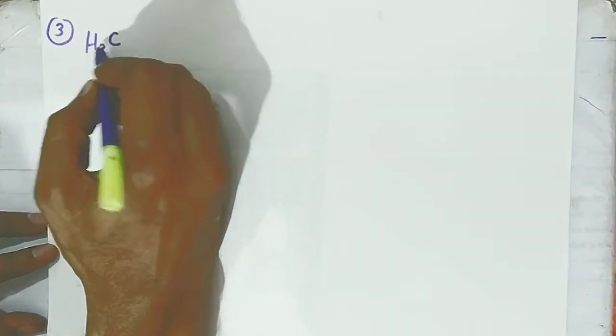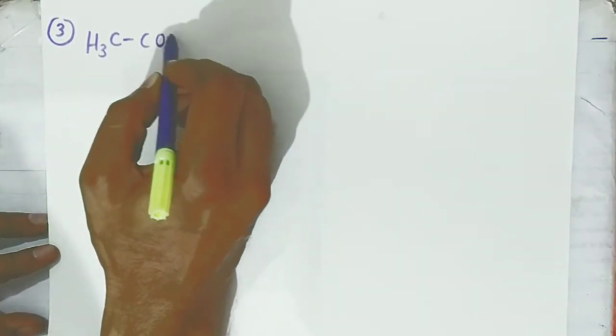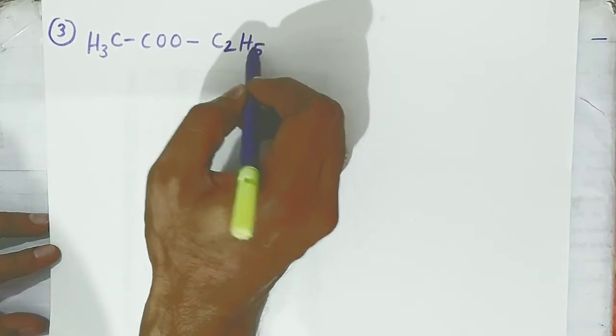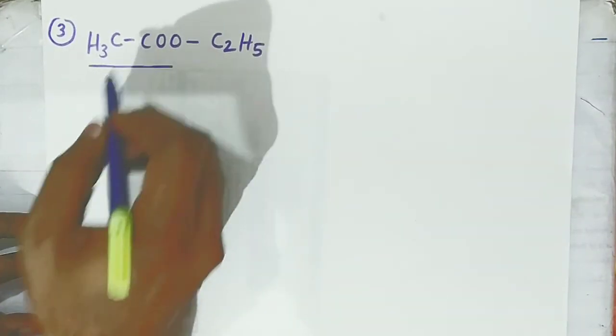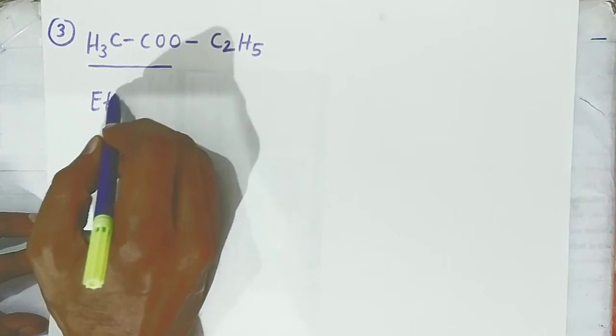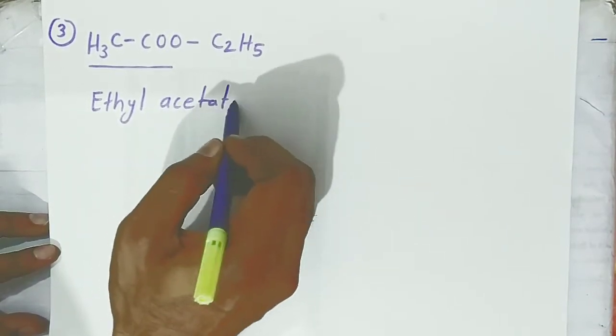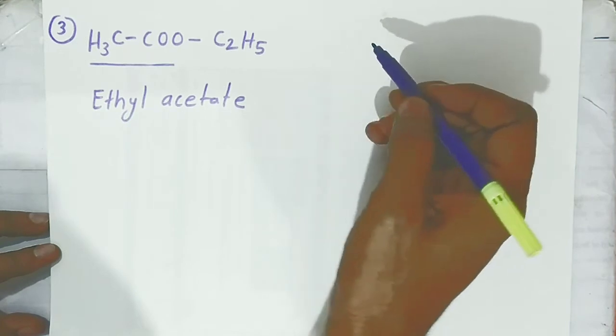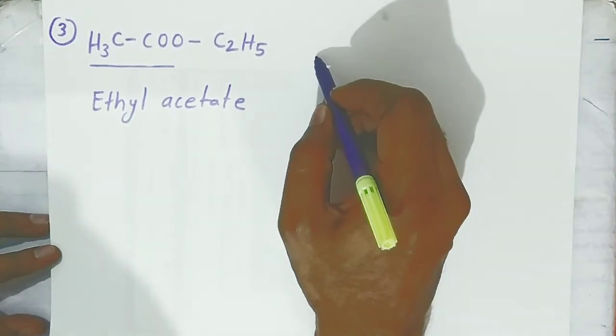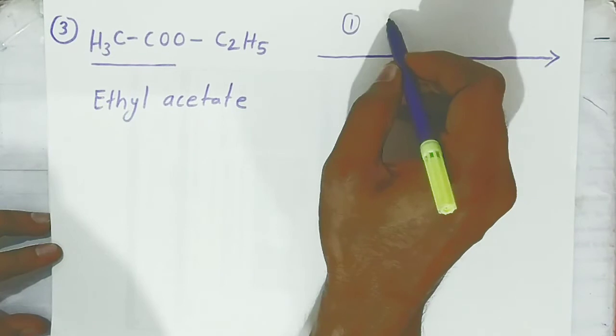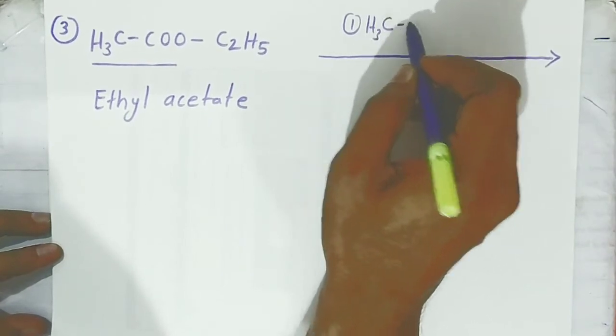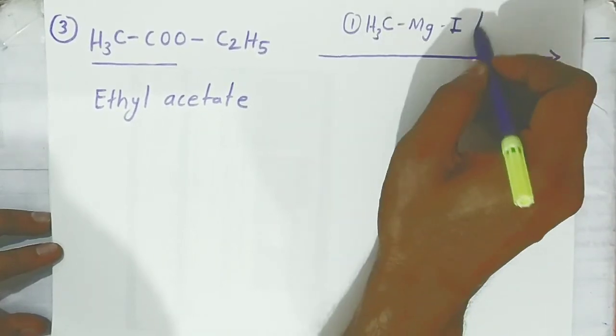The third reaction of ester is very important. Here we are using a Grignard reagent — ethyl magnesium halide. We take the simplest ester, ethyl acetate (CH3COOC2H5), and we are adding methyl magnesium iodide in the presence of ether as a solvent.